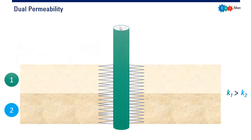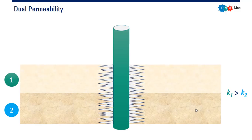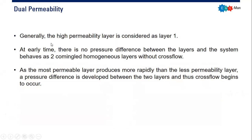We start with a simple model: we have a well and a layered reservoir with a first layer and a second layer. The well is perforated throughout both layer one and layer two. Importantly, the permeability of layer one is higher than the permeability of the second layer. This is the description of the dual permeability model.